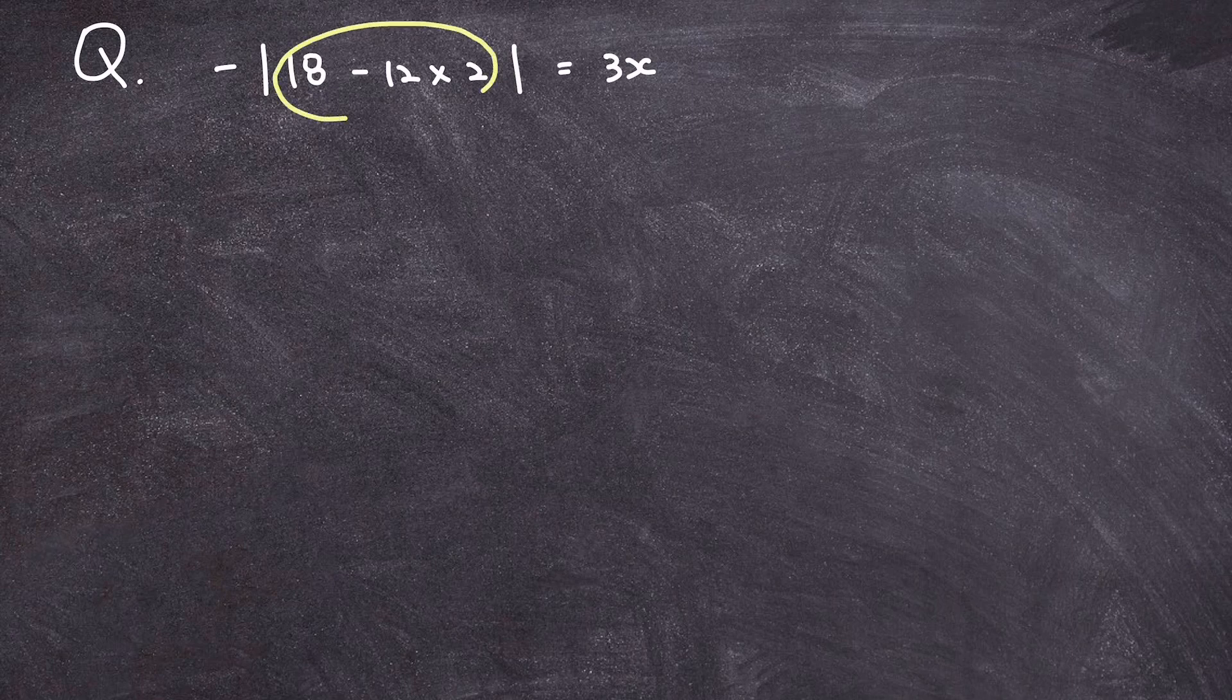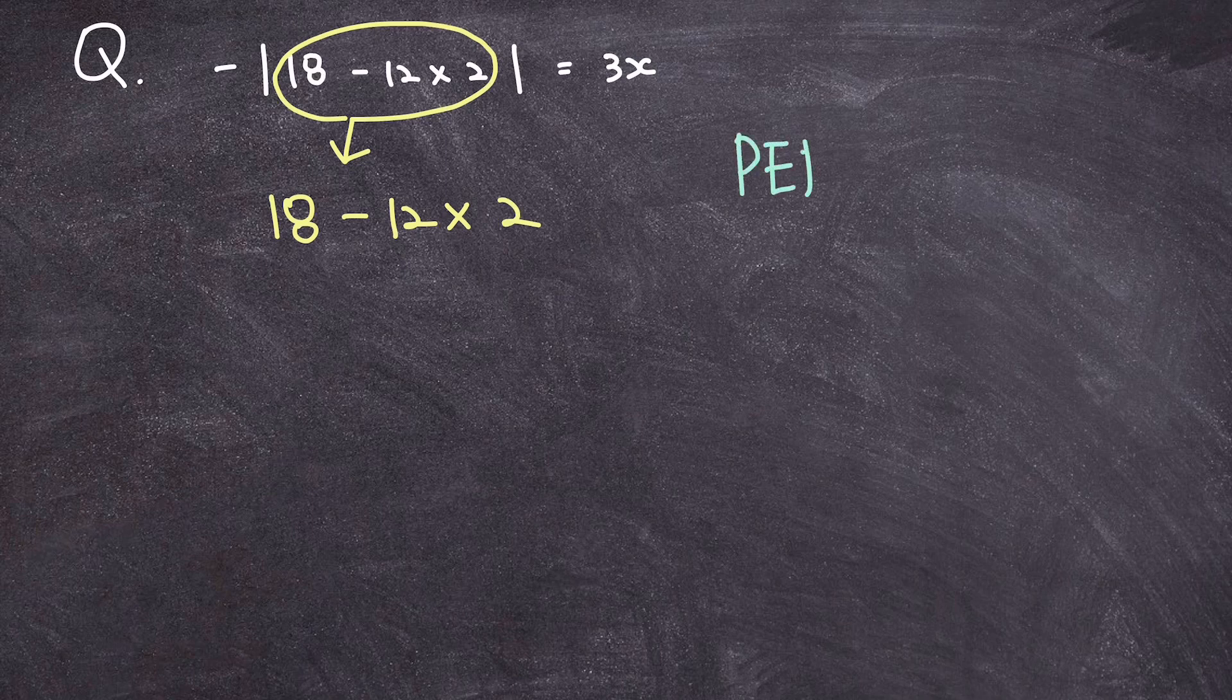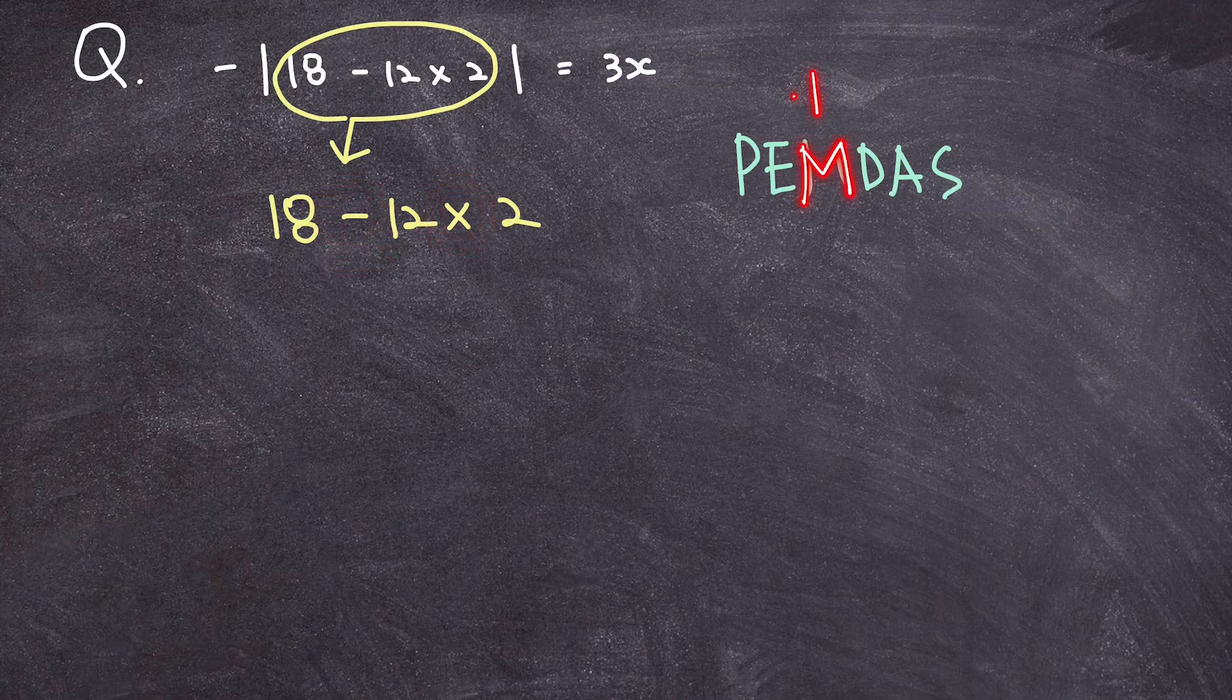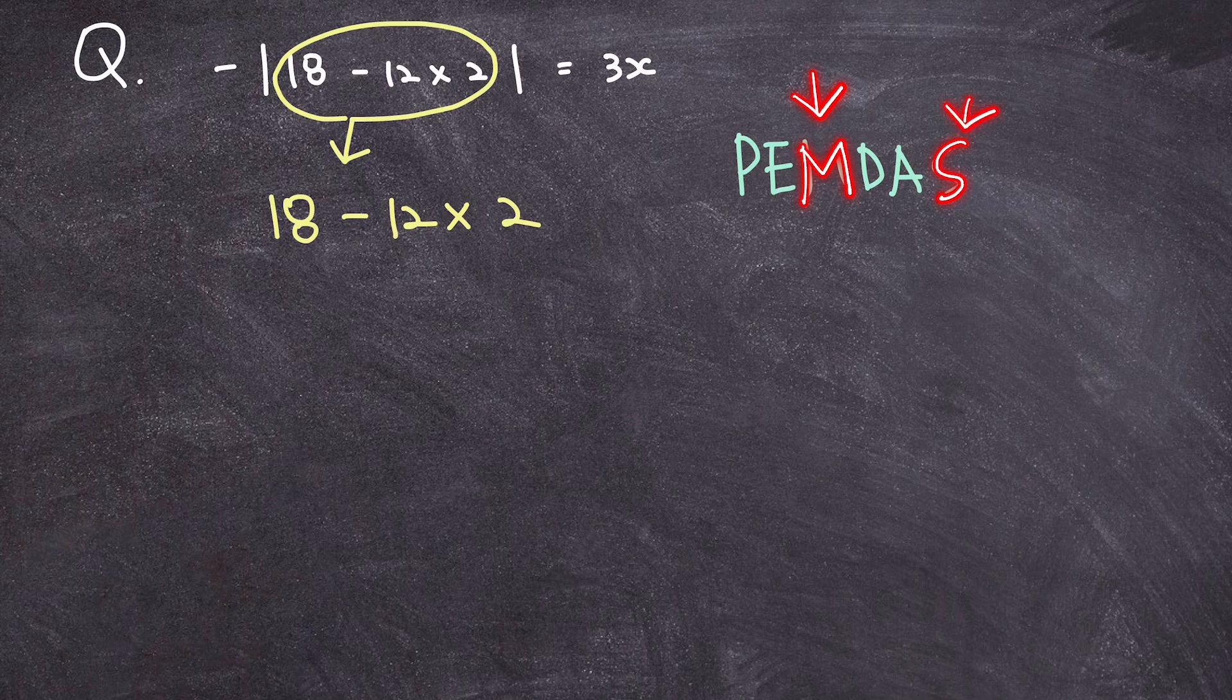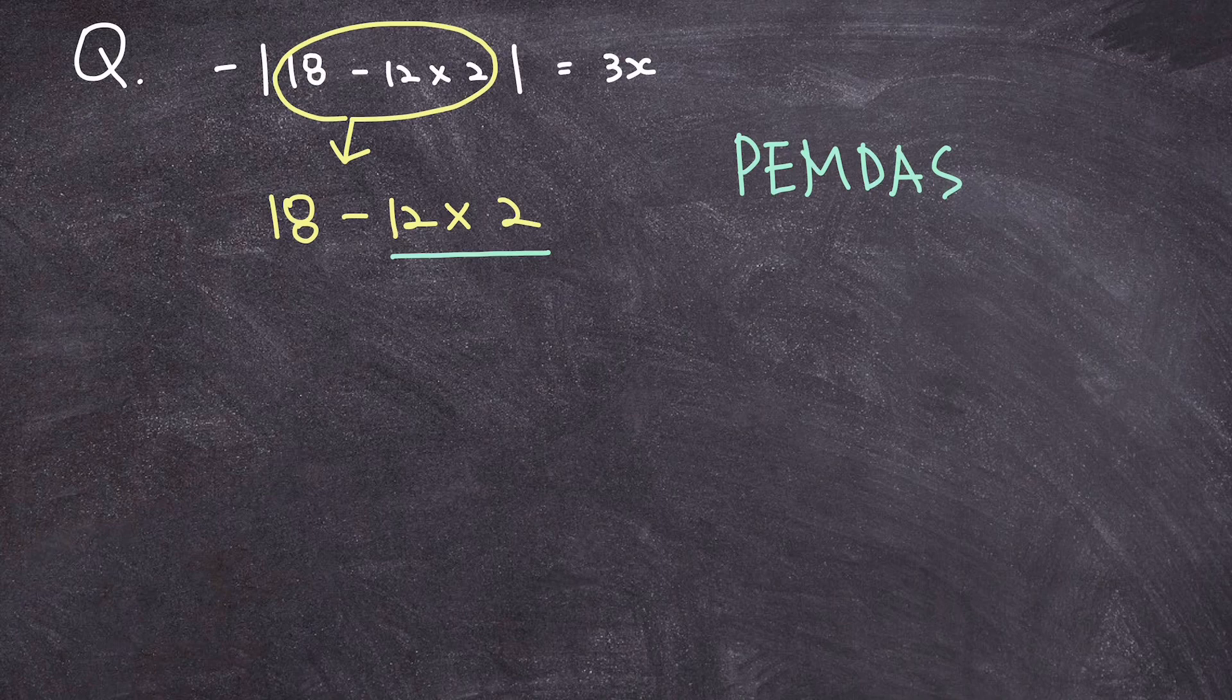So I'm going to circle this and rewrite it, 18 minus 12 times 2. Now, according to the order of operations or the rule of PEMDAS, we need to deal with multiplication first before we deal with this subtraction, because multiplication is situated right here before subtraction, which is situated in the last word. So, let's go ahead and solve the multiplication first, and that's 12 times 2, which is equal to 24.